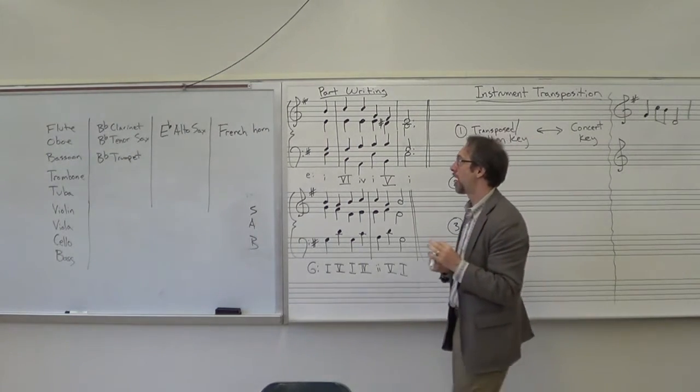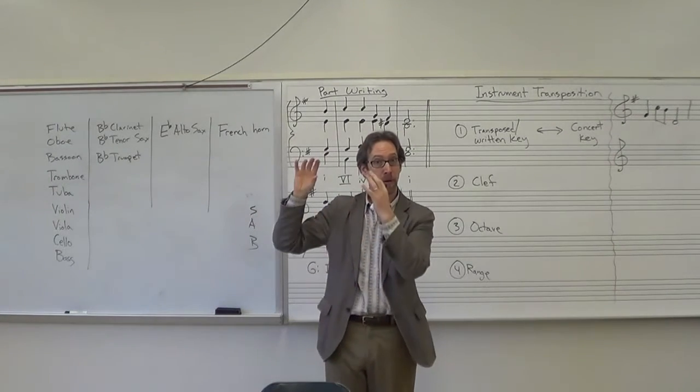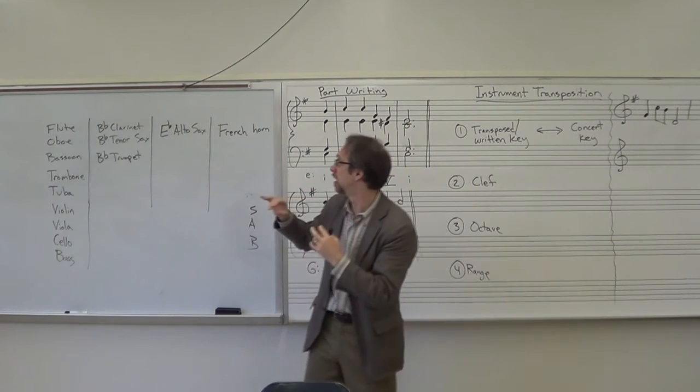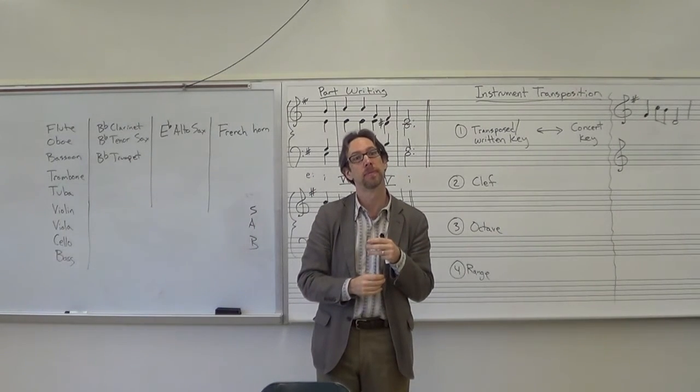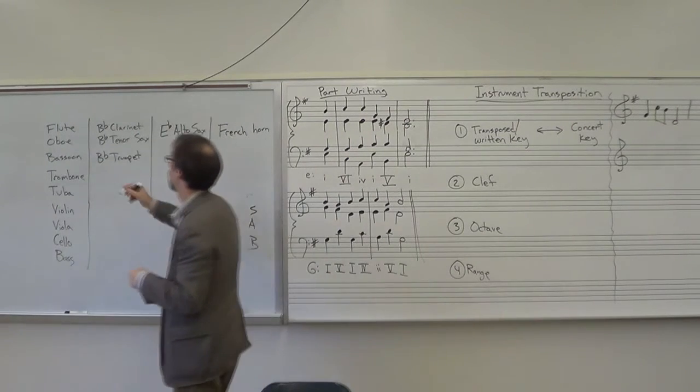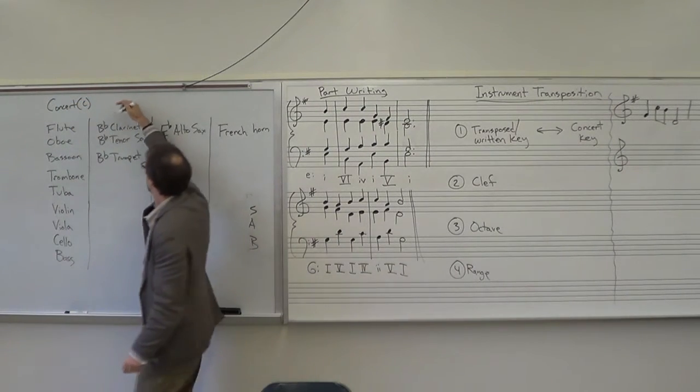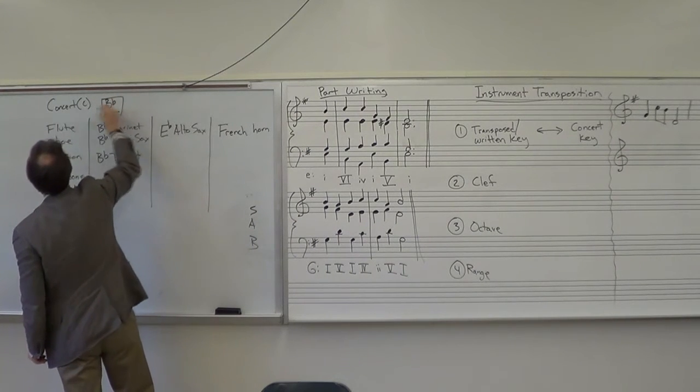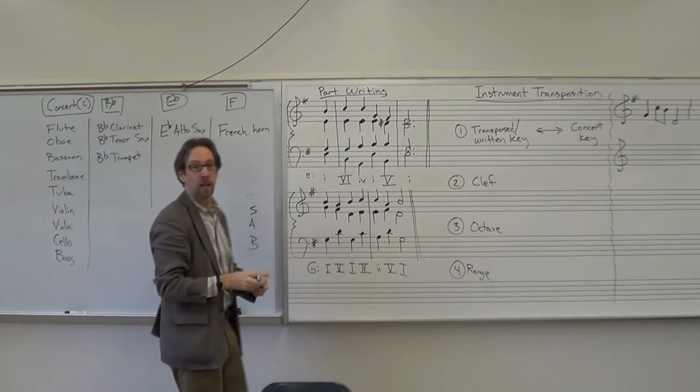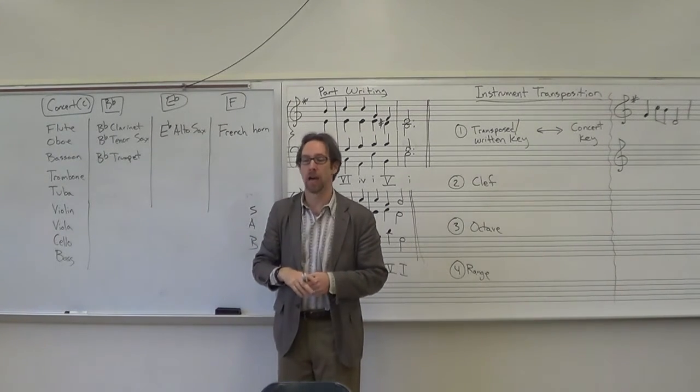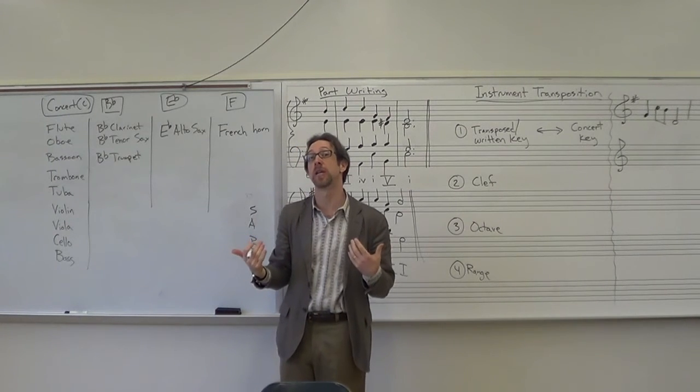And what that means is when a flute player sees a C written on their music paper, they'll play a note, and it will sound differently than the clarinet player who plays the C on their instrument. It won't sound the same because they're in a different key. So right here, this is our concert or C instruments, here's our typical B-flat instruments, E-flat instruments, F instruments.